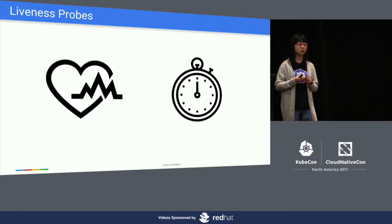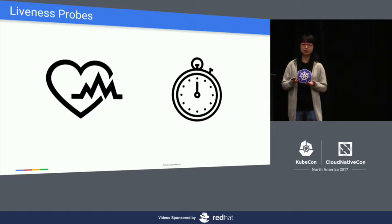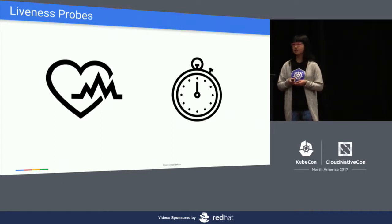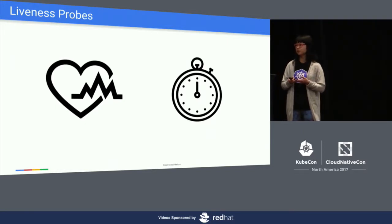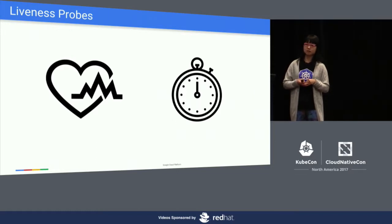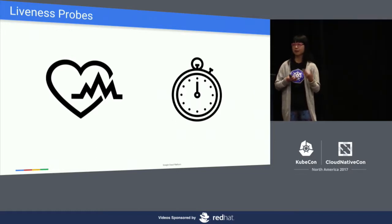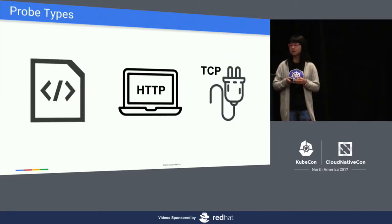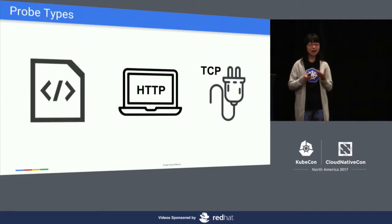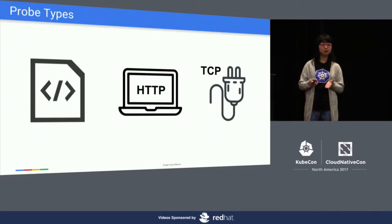Given that Kubelet has the ability to restart containers, we can ask it to do so in a much smarter way than simply using Docker to see if the containers are alive or not. Users can configure Kubelet to perform smarter health checking using something called liveness probes. This is especially important if you have a workload or an application that can get into a broken state without crashing the container.